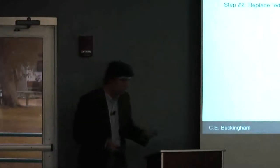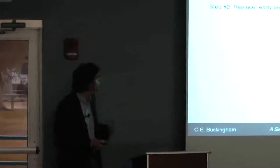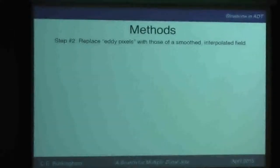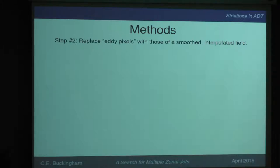So what we'll do is identify those eddy pixels and remove them, and replace them with a smooth interpolated field. One way would be to eliminate the eddies and replace them with NANs, but if the eddies weren't there, there would be something there — your noise gets very large. So I had to replace it with something, and I came up with this smooth interpolated field.